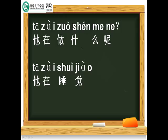Now we learn some sentences. 他在做什么呢? 他在睡觉。很好! Please read after me. 他在做什么呢? What is he doing? 他在睡觉。He is sleeping. Please read after me again. 他在做什么呢? 他在睡觉。Perfect!